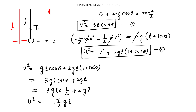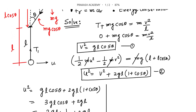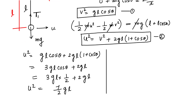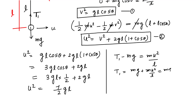So the initial speed is U² = (7/2)GL. But the question asks for the tension at the lowest position. At the lowest point, writing the equation of motion: T1 - Mg = MU²/L. So T1 = Mg + MU²/L. Substituting U² = (7/2)GL, the L cancels and the tension at the lowest point equals (7/2)Mg.